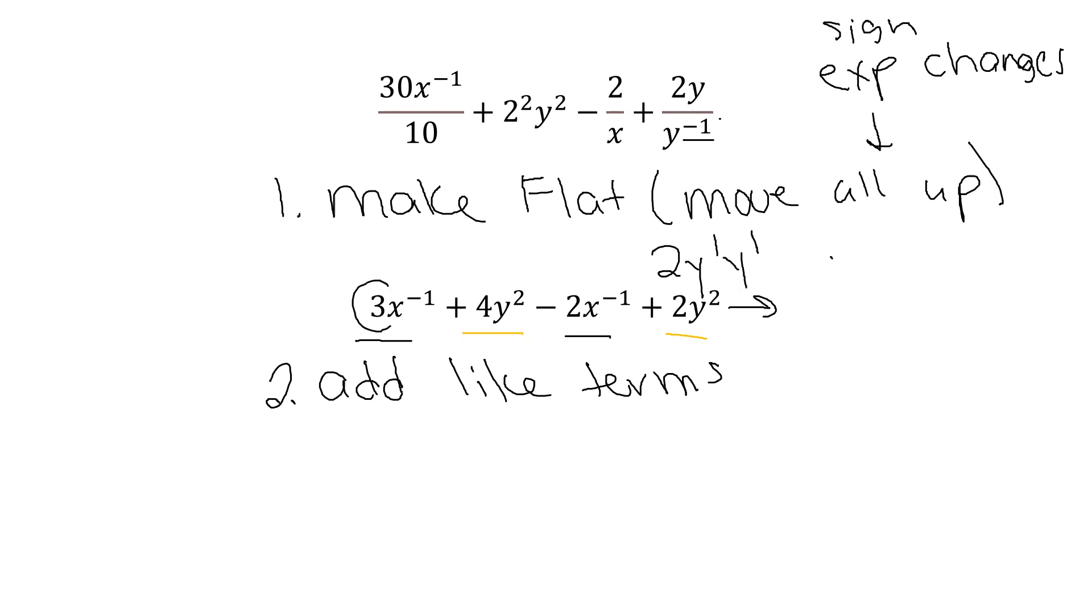For my x's, I'm going to do 3 minus 2. Watch your signs. For my 4, I'm going to do 4 plus 2, which is going to give me 3 minus 2 is 1. Remember the coefficient, or the big number in front, changes, but the exponent does not. And there's my answer.